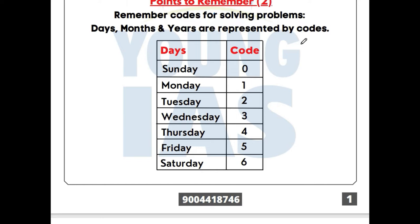Next point: there are codes for months and days which they are representing. We will remember these codes so it will be very easy to solve problems. For the days: Sunday is 0, Monday is 1, Tuesday is 2, Wednesday is 3, Thursday is 4, Friday is 5, and Saturday is 6.